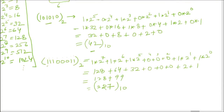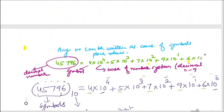The place value concept can be used as a general method to convert any number system to decimal. Here the base was 2, so we used powers of 2. If the base is 8 (octal), all place values will be powers of 8. If it is hexadecimal, all place values will be powers of 16.